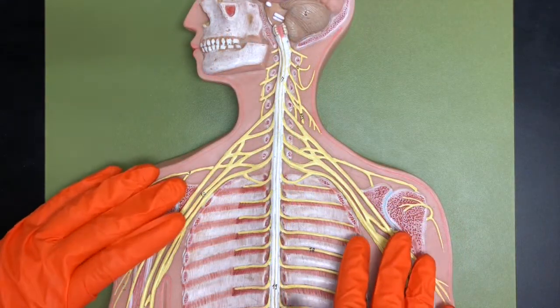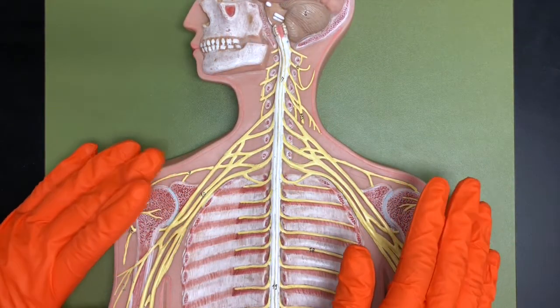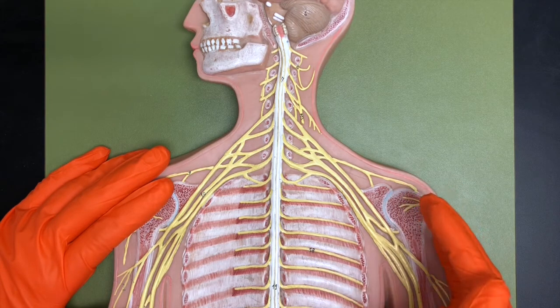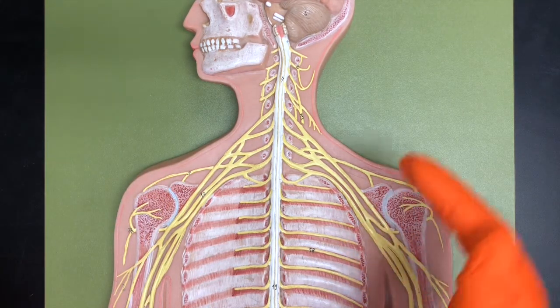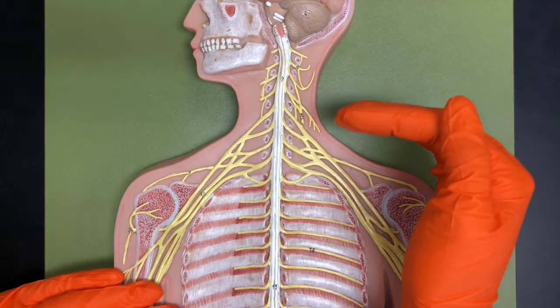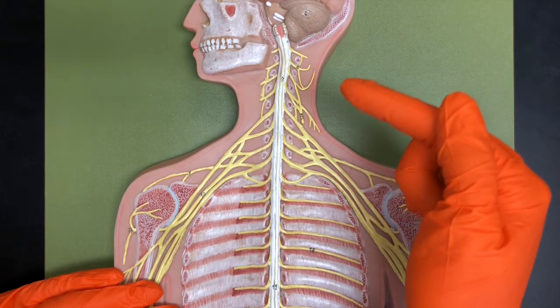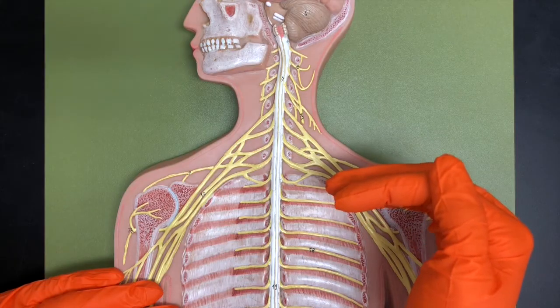There's a saying in medicine that C3, 4, 5 keeps the diaphragm alive. And that is because the phrenic nerve comes from the C4 area. And we do have some axons that come from the C3 and C5 areas as well.